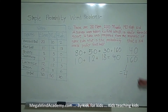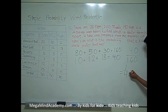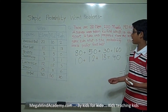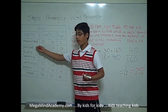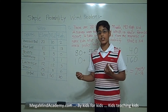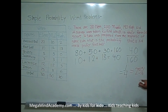Now, this fraction can be simplified down to turn into one-fourth. And we know that one-fourth is equal to 25%. So the answer to this problem is 25% chose football as their favorite sport.